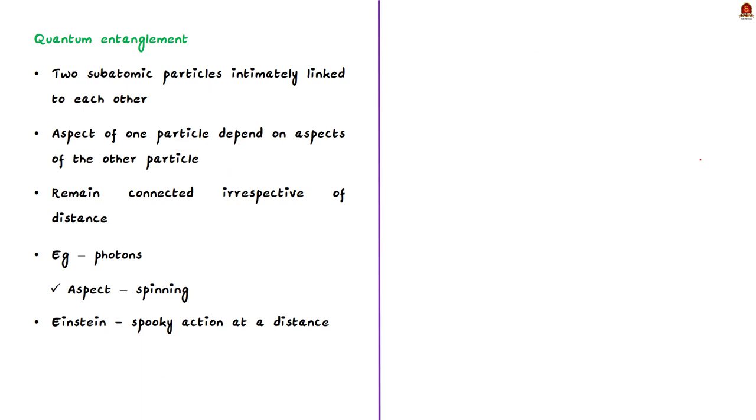Secondly, let us see about the quantum entanglement. Quantum entanglement is a phenomenon that explains how two subatomic particles can be intimately linked to each other. It is entangled in such a way that aspects of one particle of an entangled pair depend on the aspects of the other particle. The most interesting part here is that they remain connected even when they are separated by vast distances. The strange part of quantum entanglement is that when you measure something about one particle in an entangled pair, you immediately know something about the other particle. Even if they are millions of light years apart. Albert Einstein famously called the phenomenon as spooky action at a distance.